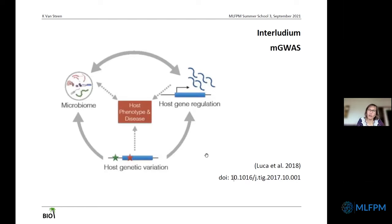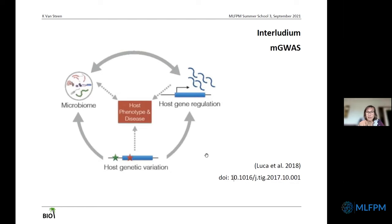As an example of gene-environment interactions and how they may be important for understanding disease risk, I give you the example with microbiome data. We see different types of interactions between microbe and genetic information — host genetics may directly impact the phenotype and also have impact on the microbiome, or host genetics may interact with the microbiome and in that way regulate gene expression, which then has an impact on the phenotype.